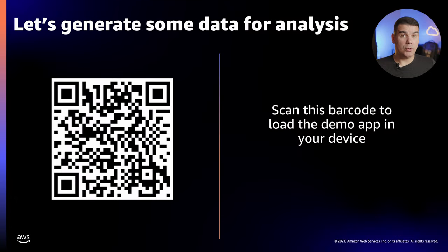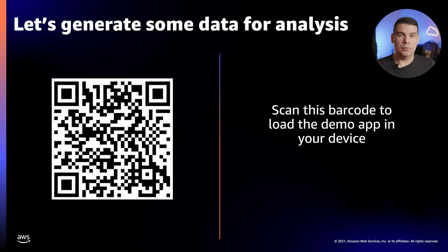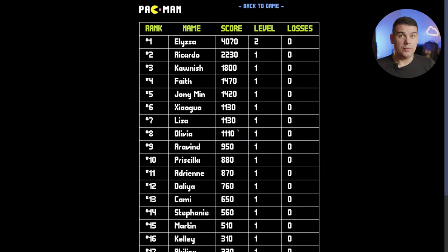During the in-person session, I asked the attendees to generate data to Elastic Observability by playing the demo I built around the famous game Pac-Man. Since you won't be able to play the game live, I will show you what the demo looks like. One of the most important parts of the game is this globally available scoreboard where everybody can see who is actually rocking on the game.